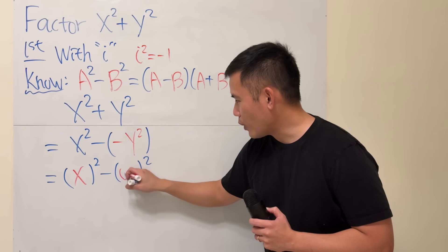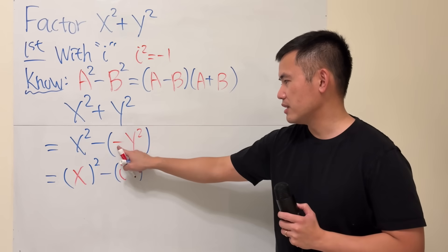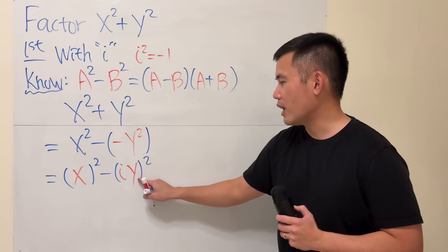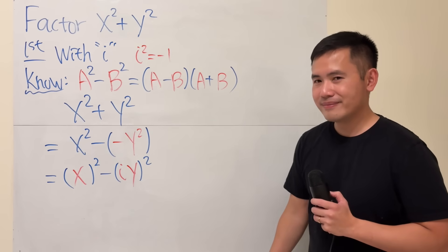So, I'm going to put on the i right here. Square that, we get a negative 1. And then, to get y squared, I just need to put on the y. Square that, I get that.